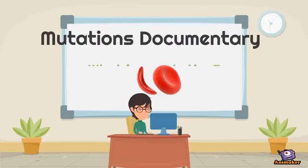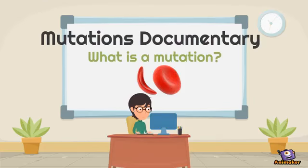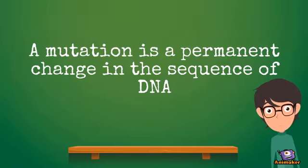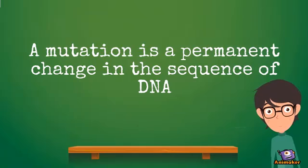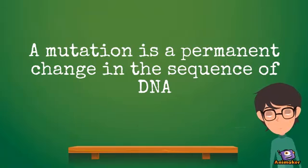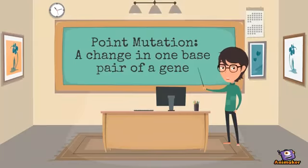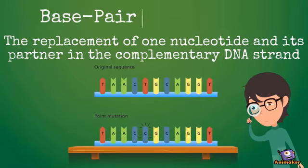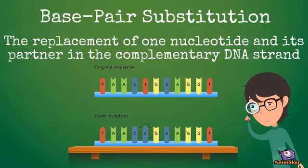A mutation is a permanent change in the sequence of DNA. One type of mutation we will be looking at is a point mutation, which is when one base pair of a gene is changed. One subtype of a point mutation is called a base pair substitution, which is the replacement of one nucleotide and its partner.